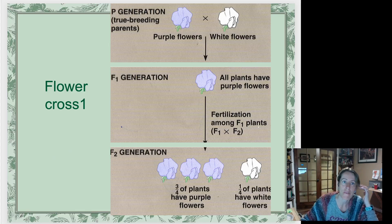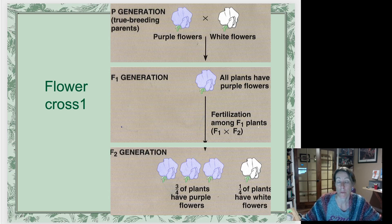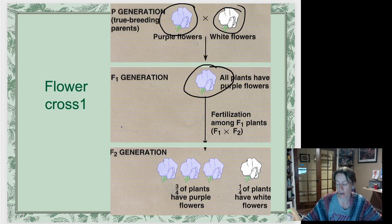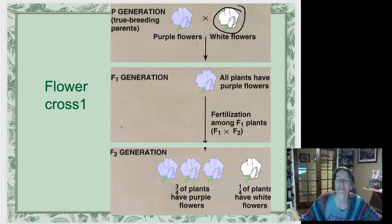Here on this slide we have a basic summary of what we just talked about from the first Mendel intro, where we have a purple-flowered true-breeding parent and a white-flowered true-breeding parent. We cross them together and we see in the next generation all the offspring are purple, and they're as purple as the purple parent. So there are some genetic terms on here.